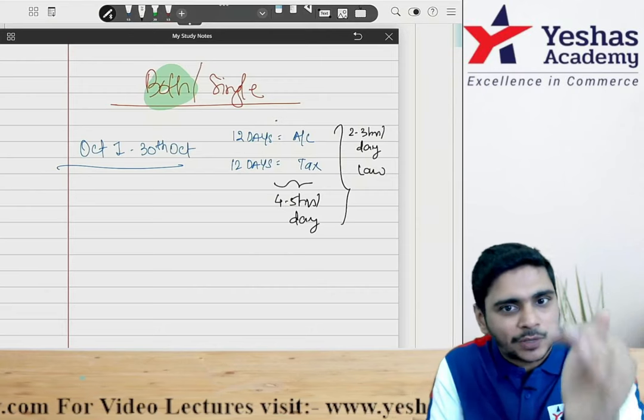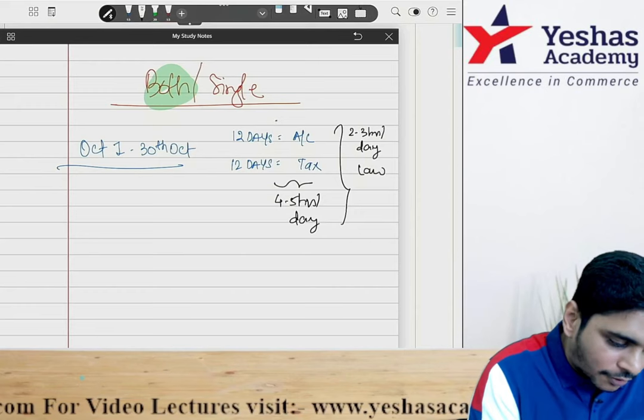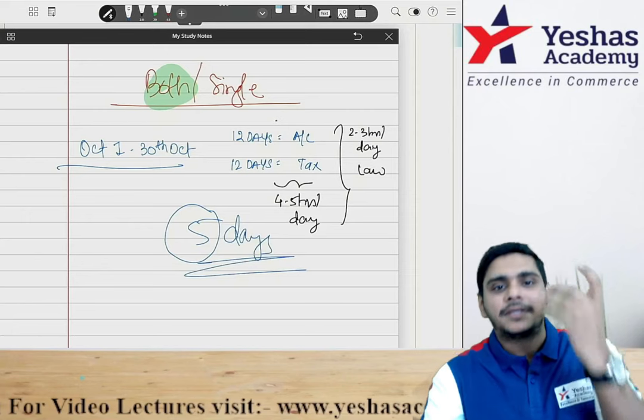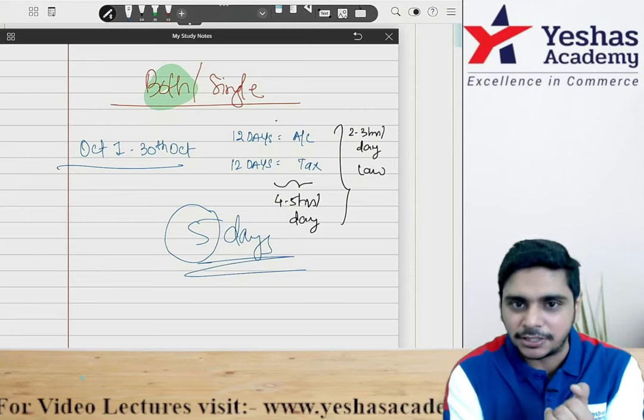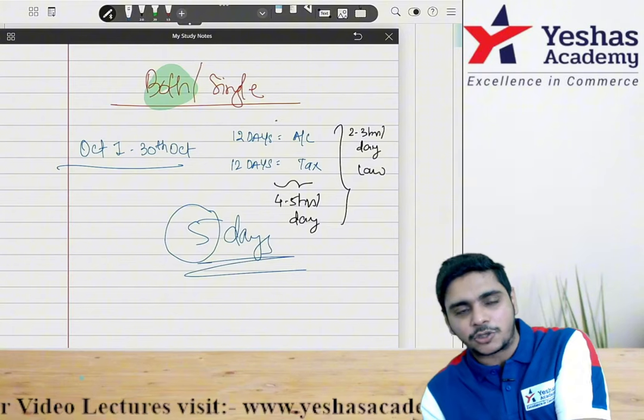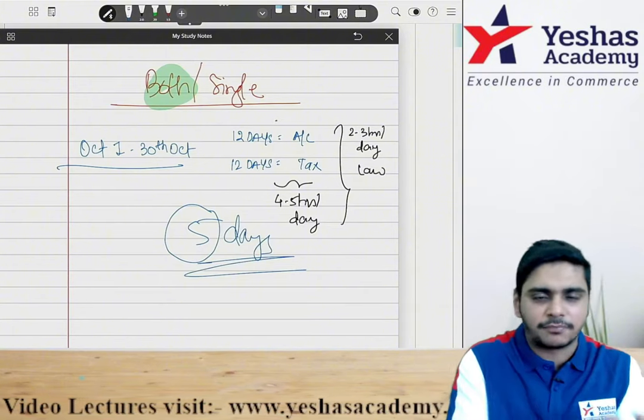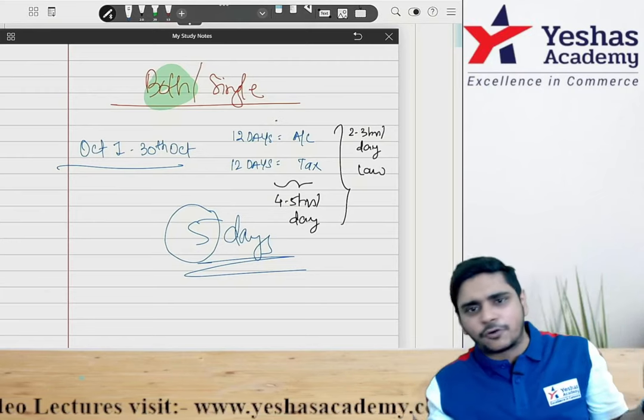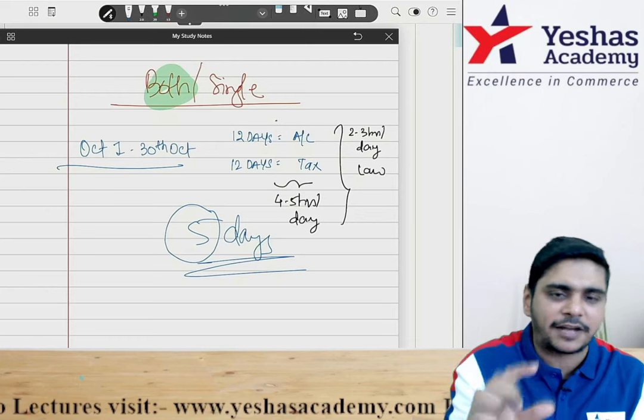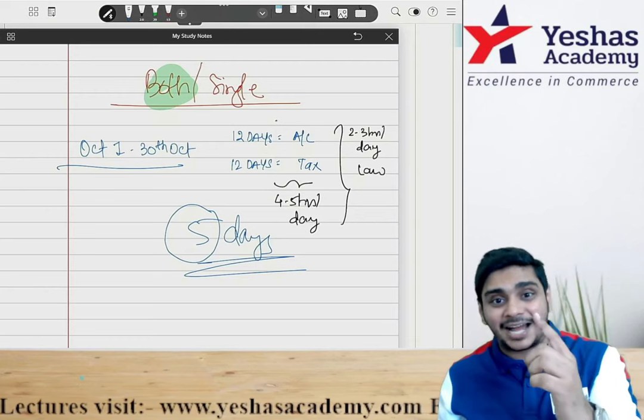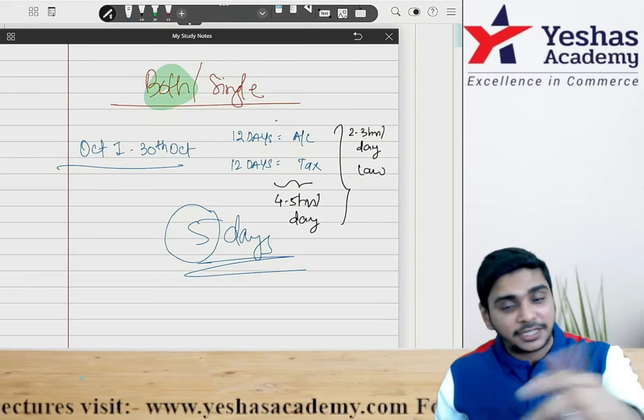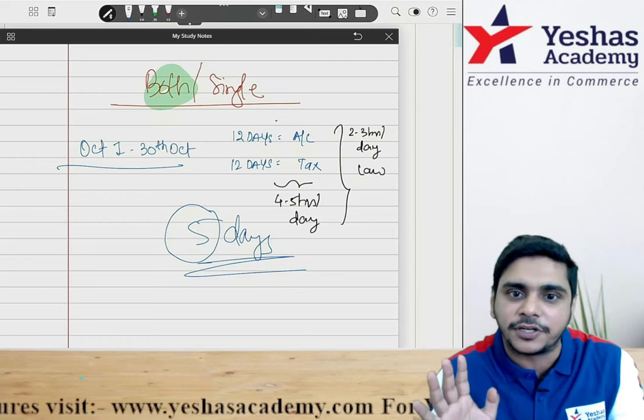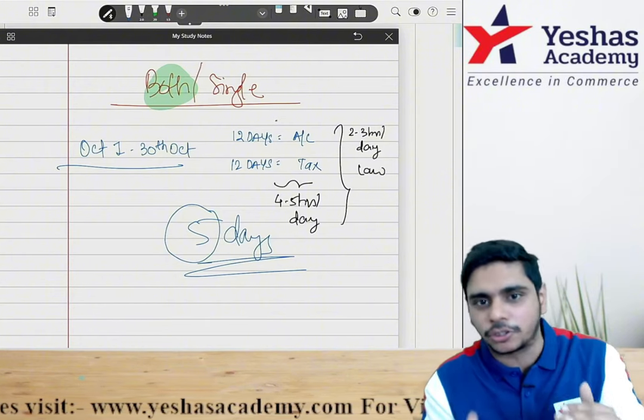So I am giving you 24 days. Plus there are 5 more days. These 5 days are buffer. Because whatever will happen, sometimes you are not well. Sometimes at family, at home, somebody is not well. Maybe you will have some obligation, maybe some family function, some festival is there. Diwali, some other thing would be there. So for that you are using these 5 buffer days. Don't be relaxed. If you are done within that 24 days, again you revise. Like 2 days accounts, 2 days tax and 1 day law you will finish it off. So this is for the October month.